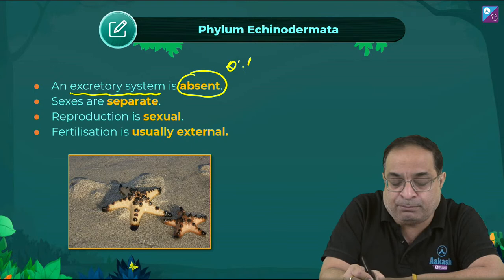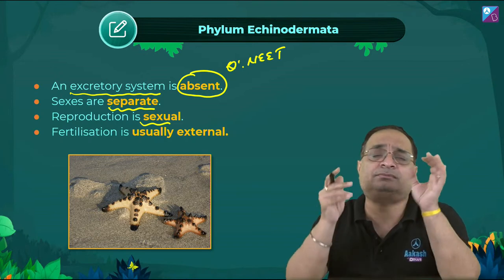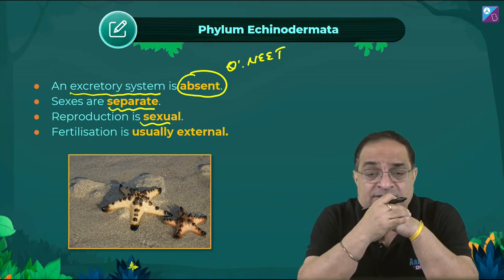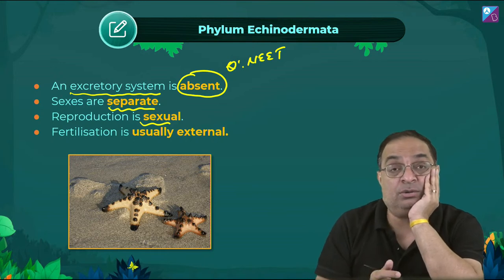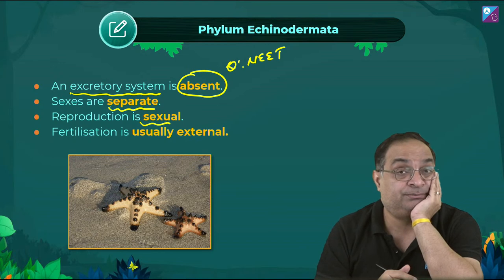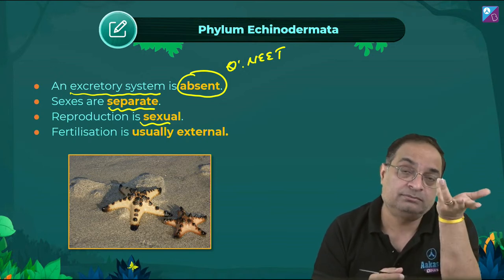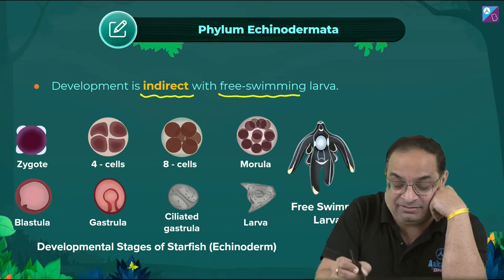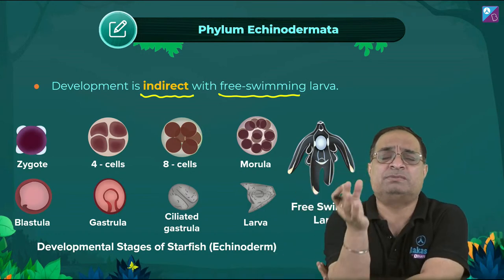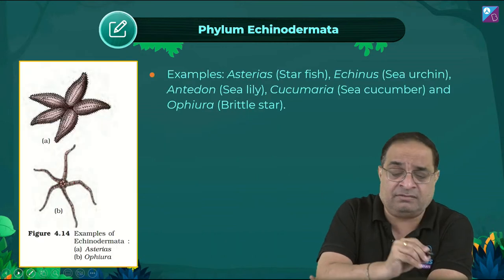Echinoderms are dioecious, reproduce sexually, with external fertilization and indirect development. There are many larval stages (Bipinnaria, Brachyolaria, Ophiopluteus, Echinopluteus, Vitellaria, Pentacrinoid larva, Doliolaria larva) — but you do not need to memorize these names for NCERT.